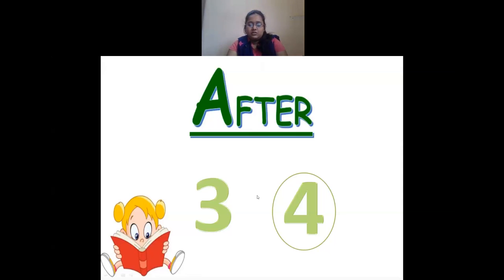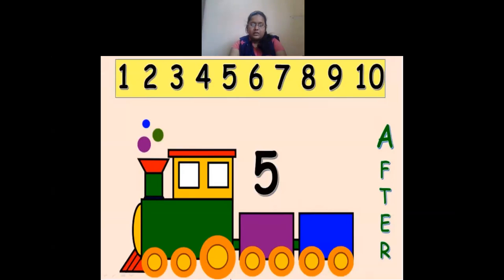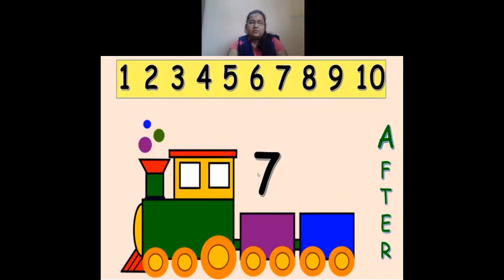The number that comes second or later is called after. Now guess the after number. Here I have 5 — what comes after 5? Counting: 1, 2, 3, 4, 5 — after 5 we have 6. So after 5 comes 6. Then we have 7. What comes after 7? Counting to 7 — after 7 we have 8. So after 7 comes 8.